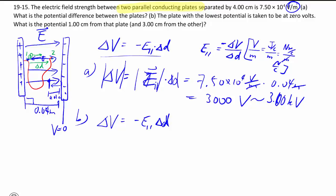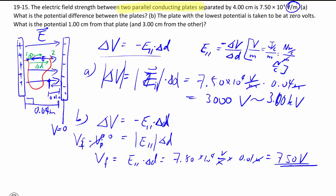And since we're moving the other way as the electric field, we put another negative sign. So we drop the negative sign overall. And that's equal to V final minus V original. V original here is the zero. So V final is equal to E parallel times D, which is 750 volts.